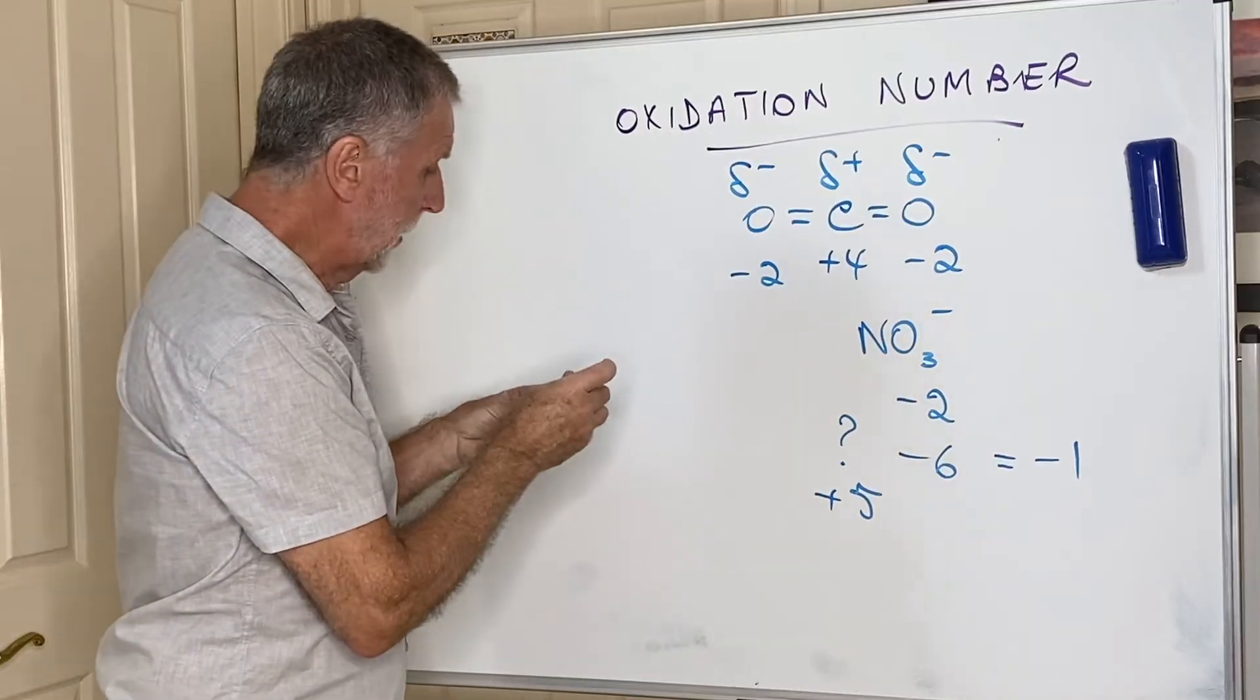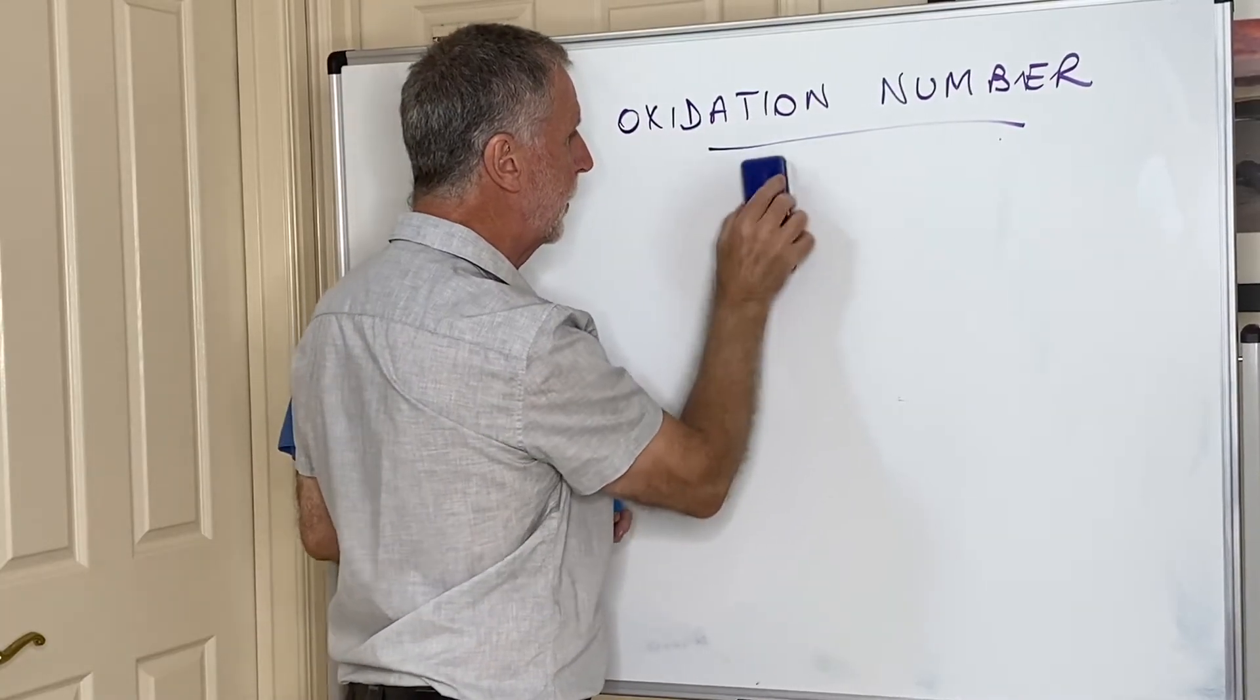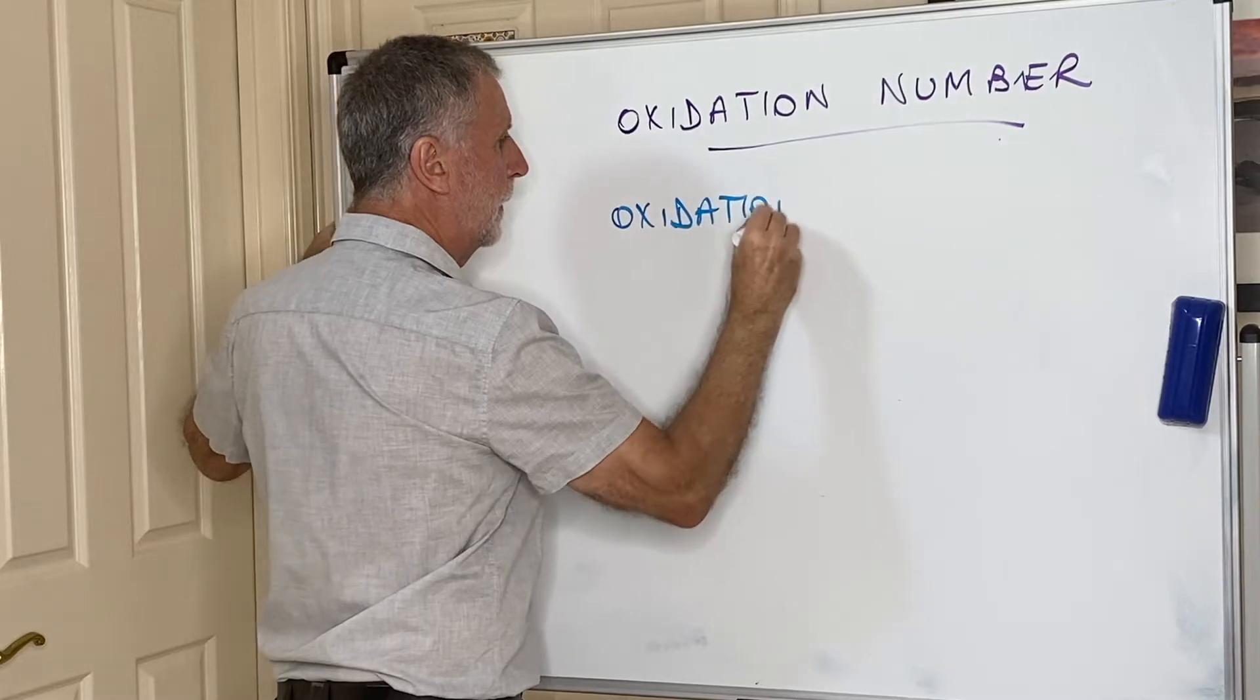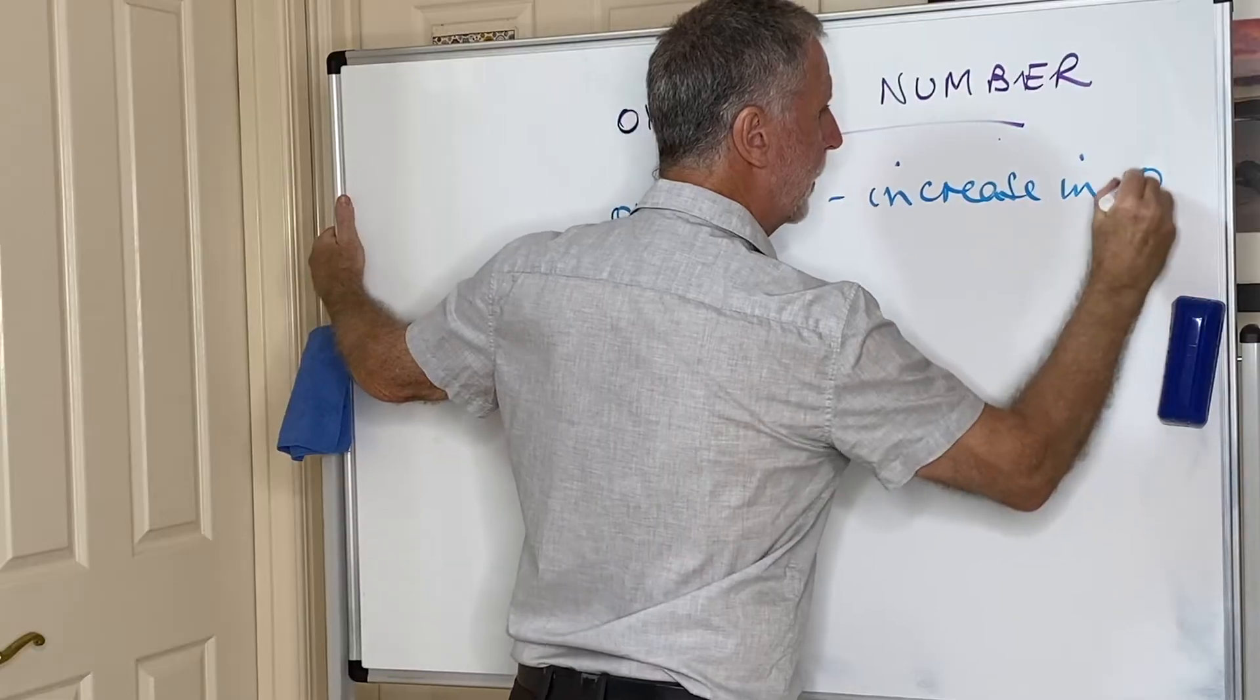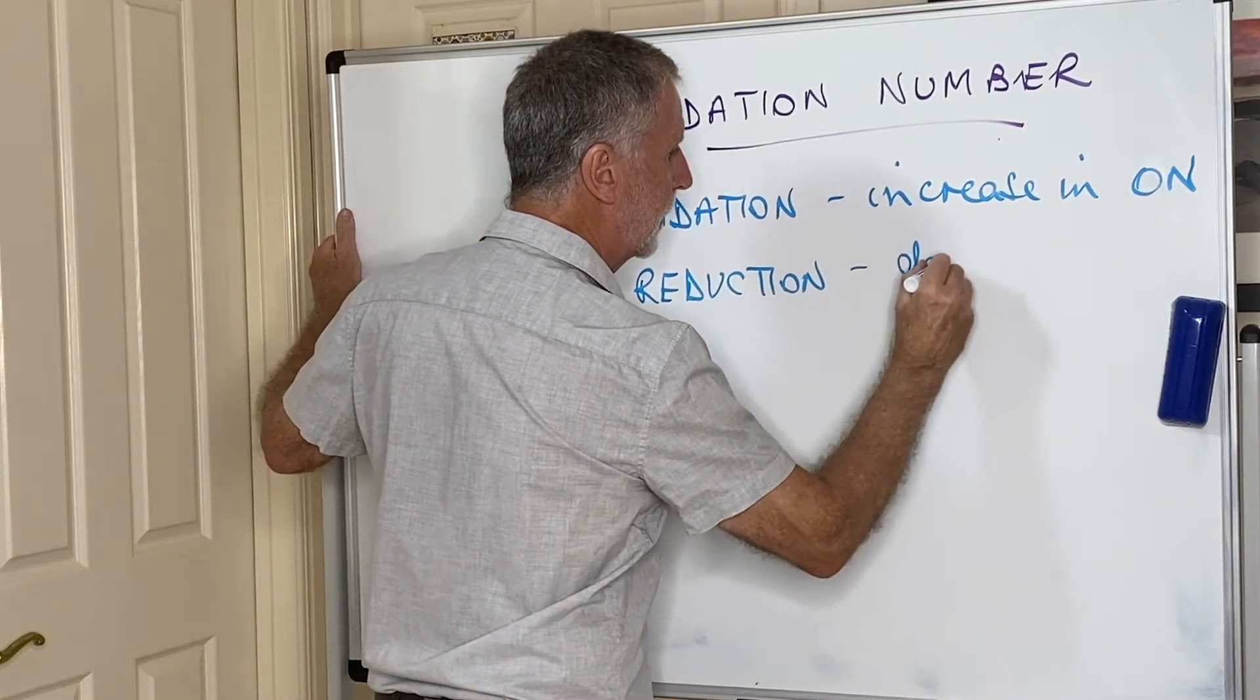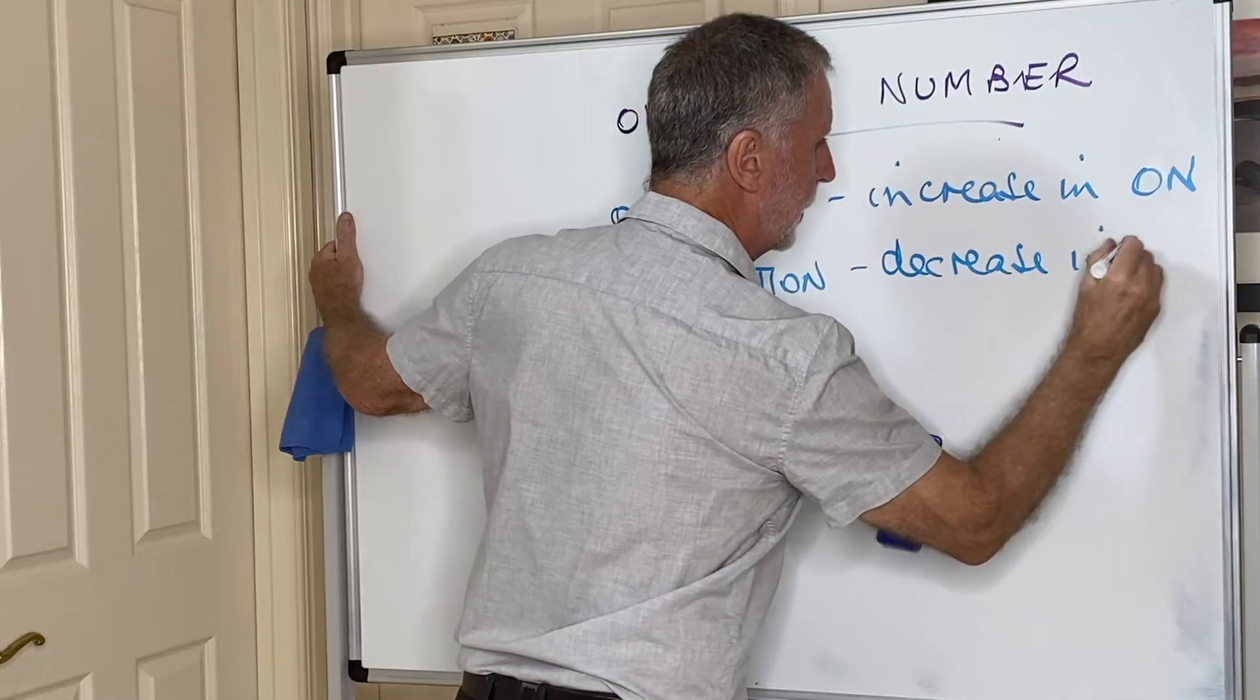How does that help us in terms of oxidation and reduction? Well, the definitions in terms of oxidation number are very easy. Oxidation is an increase in the oxidation number, and reduction is a decrease in the oxidation number.